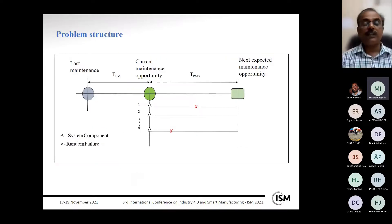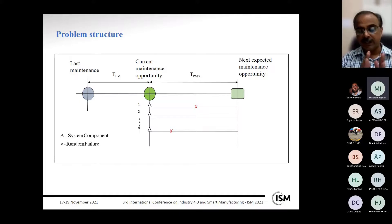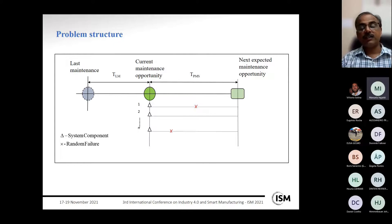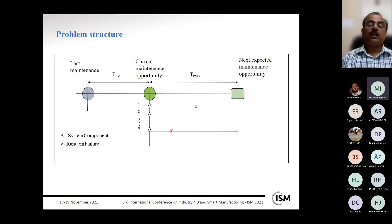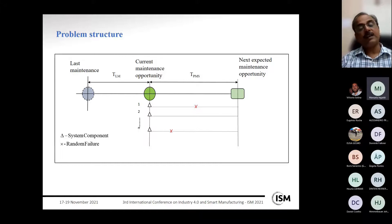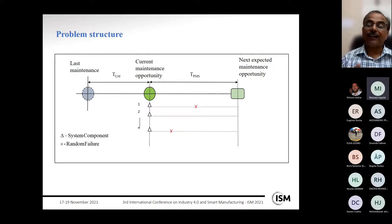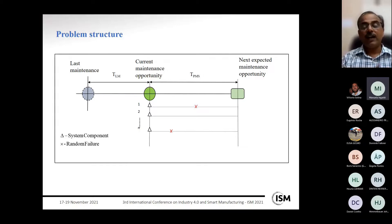This is the problem scenario considered for model development. At the current maintenance opportunity, the maintenance manager must make maintenance decisions based on system availability requirements. There is a last maintenance instance from which the service age of components is known. The manager considers this service age to determine what maintenance actions to take based on the availability requirement for the next mission period.